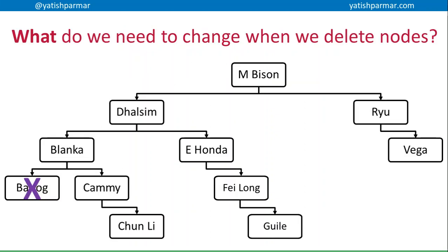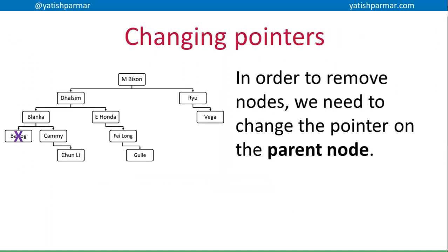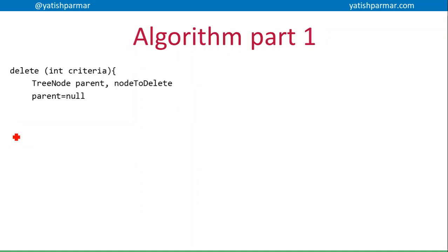So if you think about what we need to do when we want to delete nodes, I have my method called delete. I've got one parameter which is the criteria, and that's going to be the actual data that I'm looking for. I'm creating two temporary tree nodes for the purpose of this deletion process.